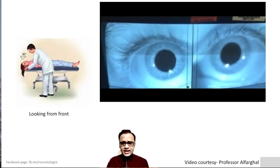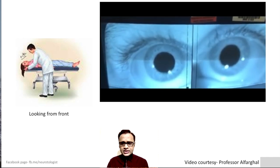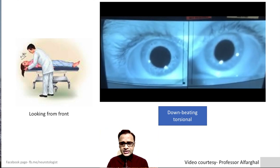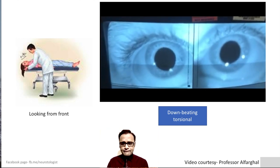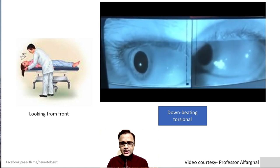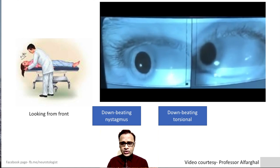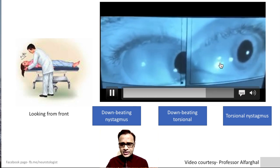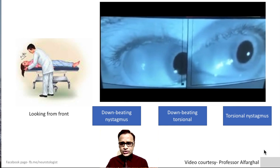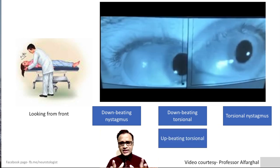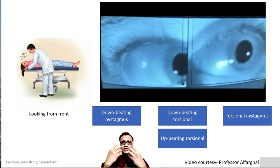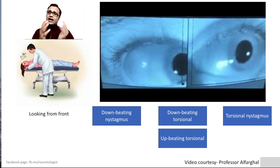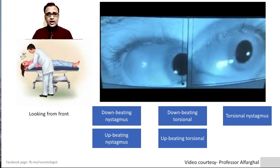Look at this nystagmus. This nystagmus is downbeating torsional in the center gaze. On the right gaze, it is predominantly downbeating. And on the left gaze, if you look at the light here, you can appreciate the torsional component. This is an exceptional example, but routinely in posterior canal BPPV, you see upbeating torsional in the center gaze, predominantly upbeating on one gaze, and predominantly torsional on another gaze.